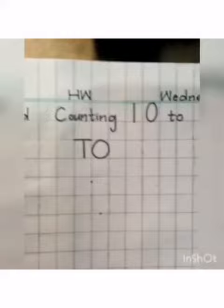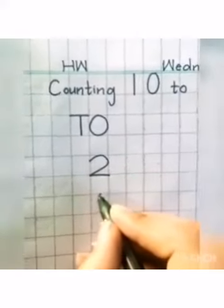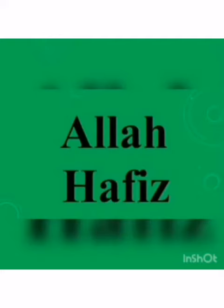Okay dear children, what comes before 3? 2, very good. And what comes before 2? 1. You have to write this backward counting in your copy. Okay dear children, take care of yourself. Allah Hafiz.